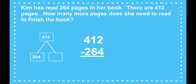I'm going to subtract the ones. 2 minus 4 — I can't do it. Go to the tens place and take a 10. That will give me 12 ones: 10 ones plus the 2 ones I had makes 12. 12 minus 4 is 8. Now I have to subtract my tens place.